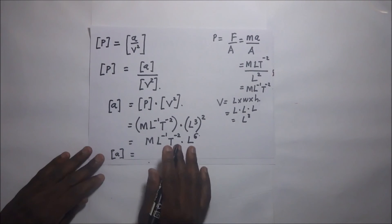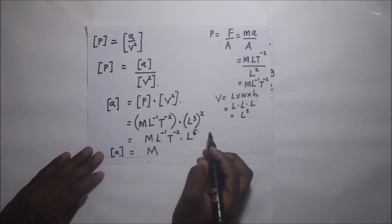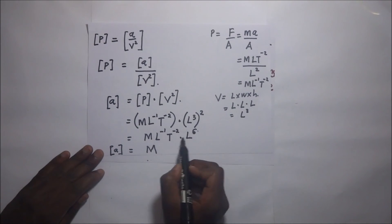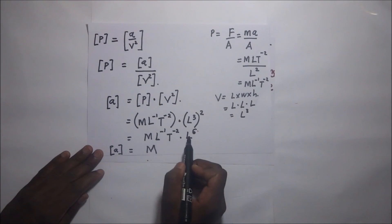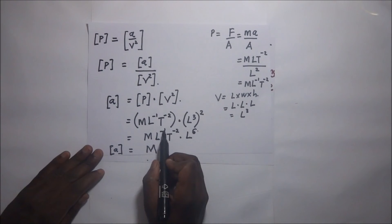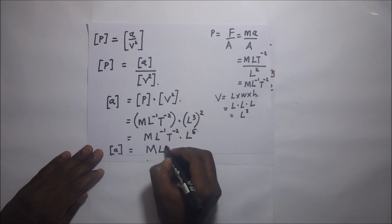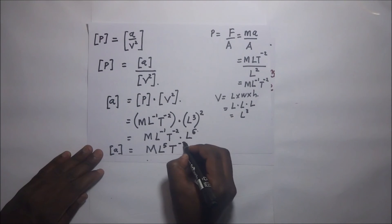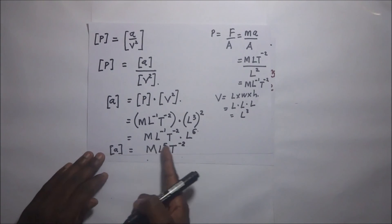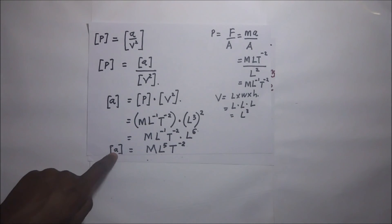Adding the powers of L: negative 1 plus 6 gives L to the power 5, and we retain T to the power negative 2. Therefore the dimensions of A are M L to the power 5 T to the power negative 2.